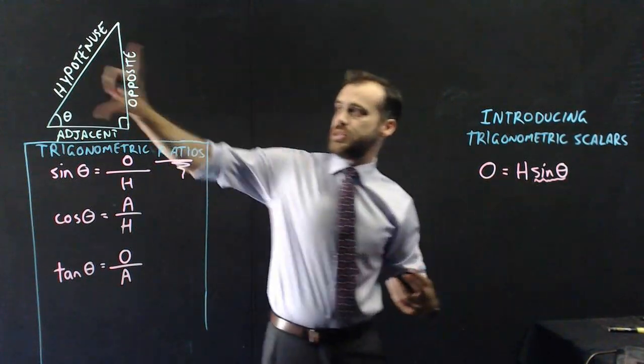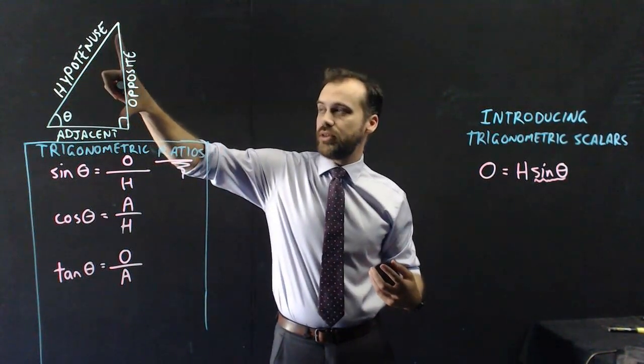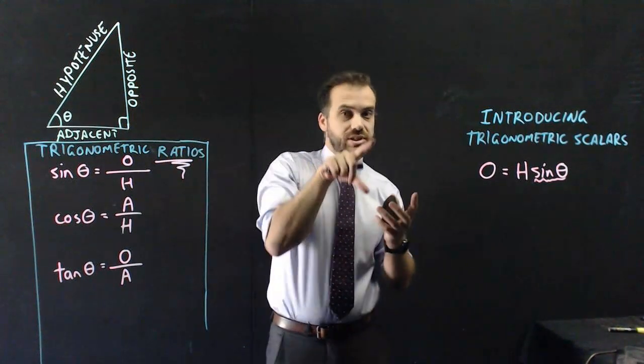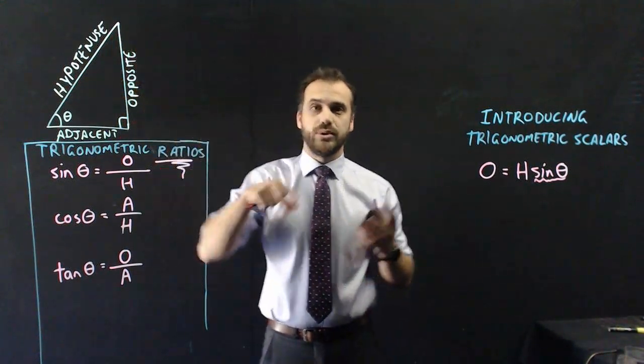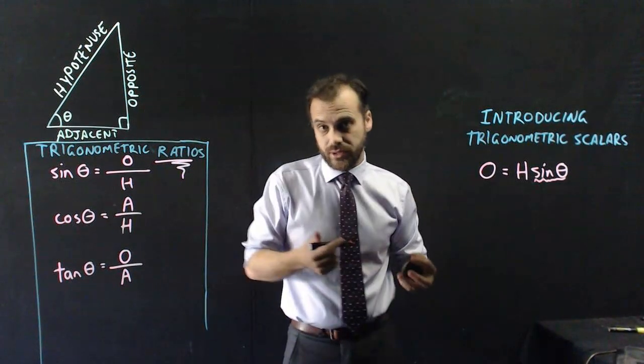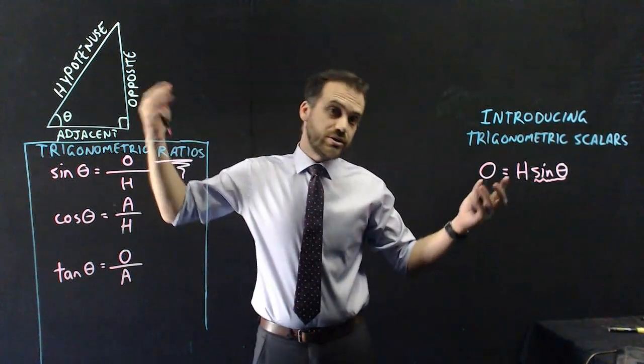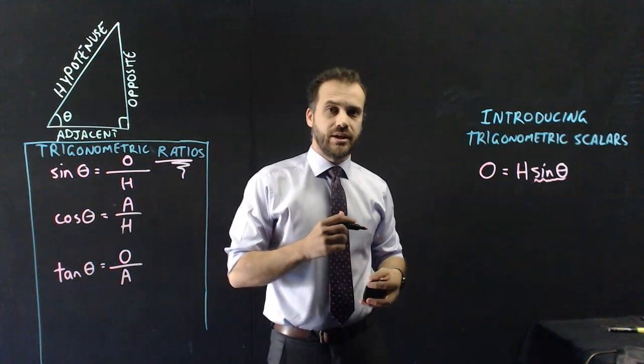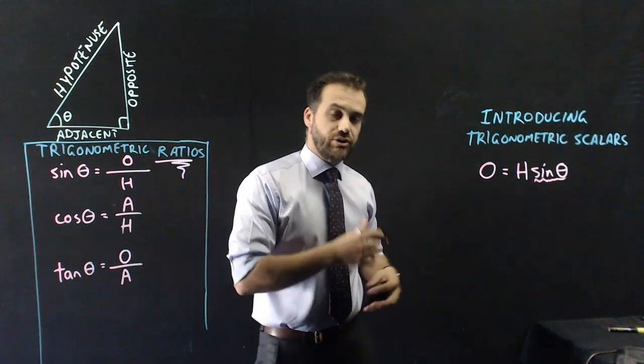And it is the thing that you multiply the hypotenuse by to get the length of the opposite. This thing times that length will equal that length. It helps you to scale one of the lengths down to another length or up to another length. But in this case, always down, because hypotenuse is the longest side.